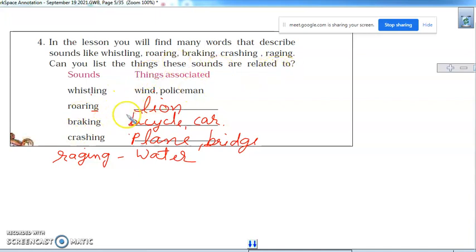Let me tell you. Whistling is related to wind or policeman. Roaring is related to lion. Braking is bicycle, car, truck, bus. And crashing is plane or bridge. Dragging is related to water.